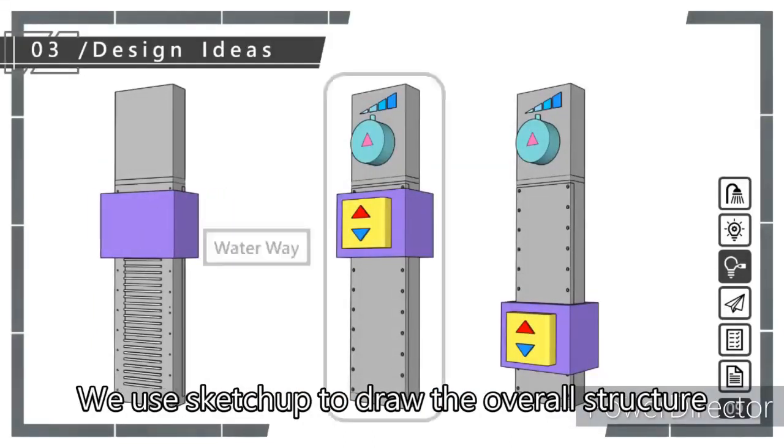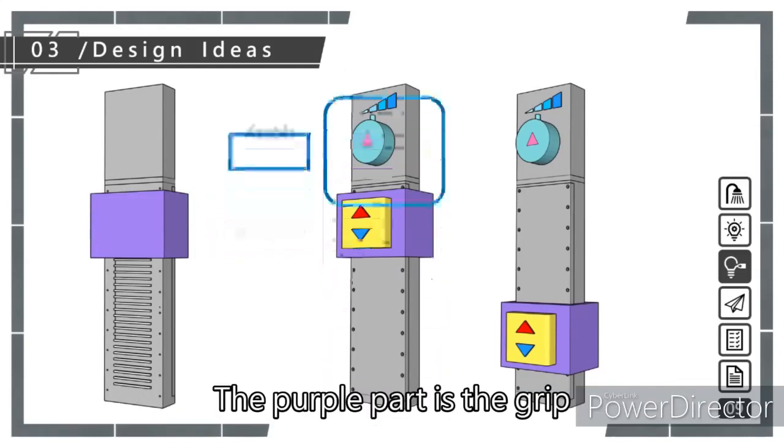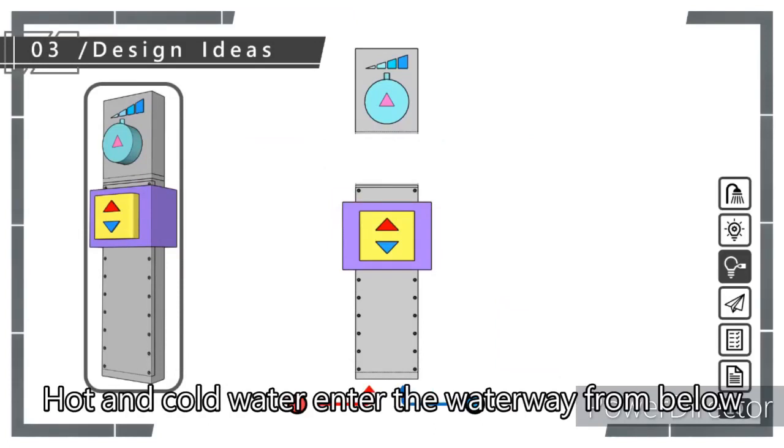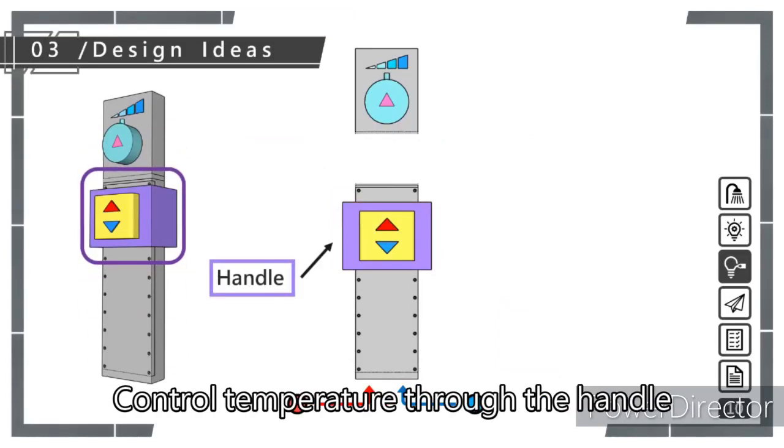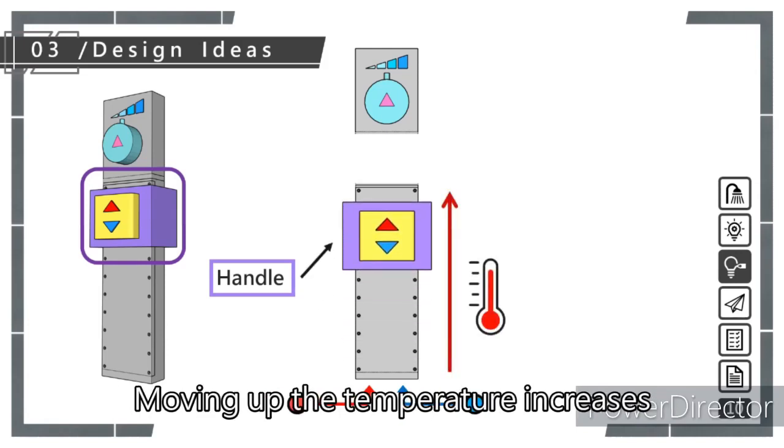We use SketchUp to draw the overall structure. The gray part is the water channel containing the structure just mentioned, the purple part is the grip, and the blue part is the knob. Hot and cold water enter the waterway from below. Control temperature through the handle: moving down decreases temperature, moving up increases temperature.